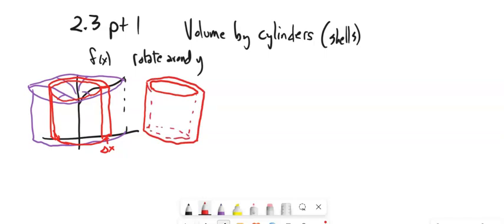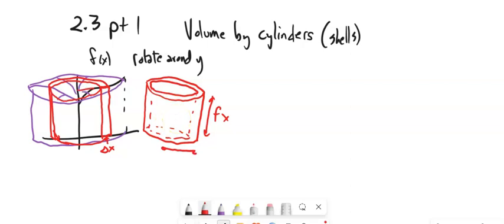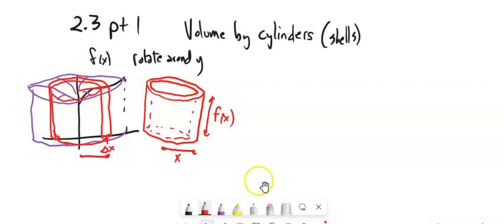So notice what I have here: I have some height, and that's my f(x). I have some diameter — the distance from the middle to the edge — and that's just my x value. And I have a hole in the middle. So I'm going to think about this as a bunch of concentric cylinders.